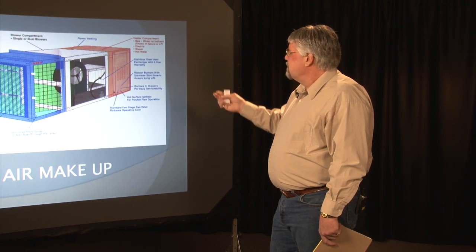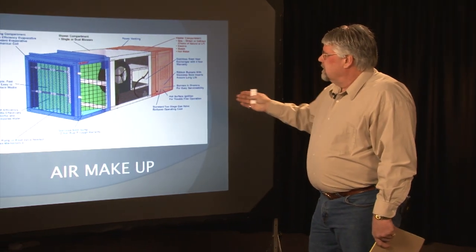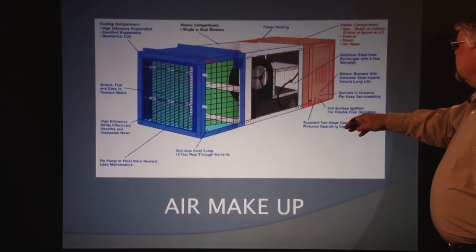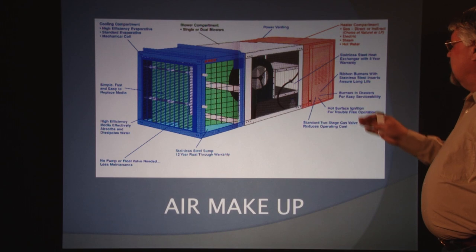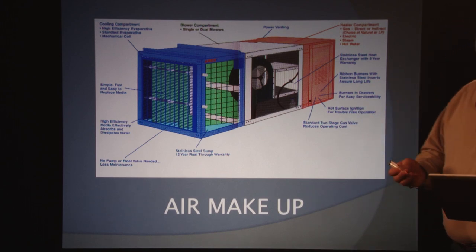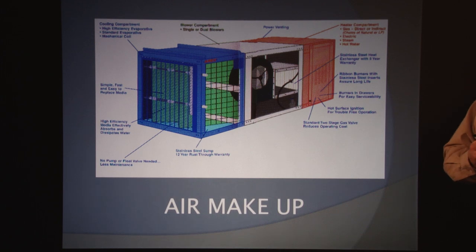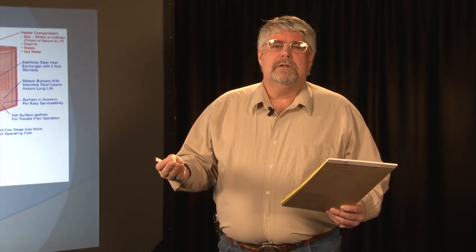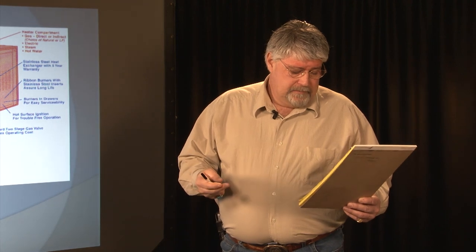Air makeup. This diagram looks complicated — it's really not. Basically air makeup goes through a series of filters, different pumps and fans. Air makeup is the air that is provided to replace air that is being exhausted. In other words, the air that goes out has to be replaced. The air makeup unit, or makeup air unit as it may be called, does this. It can also be called a makeup air rather than an air makeup — remember that.